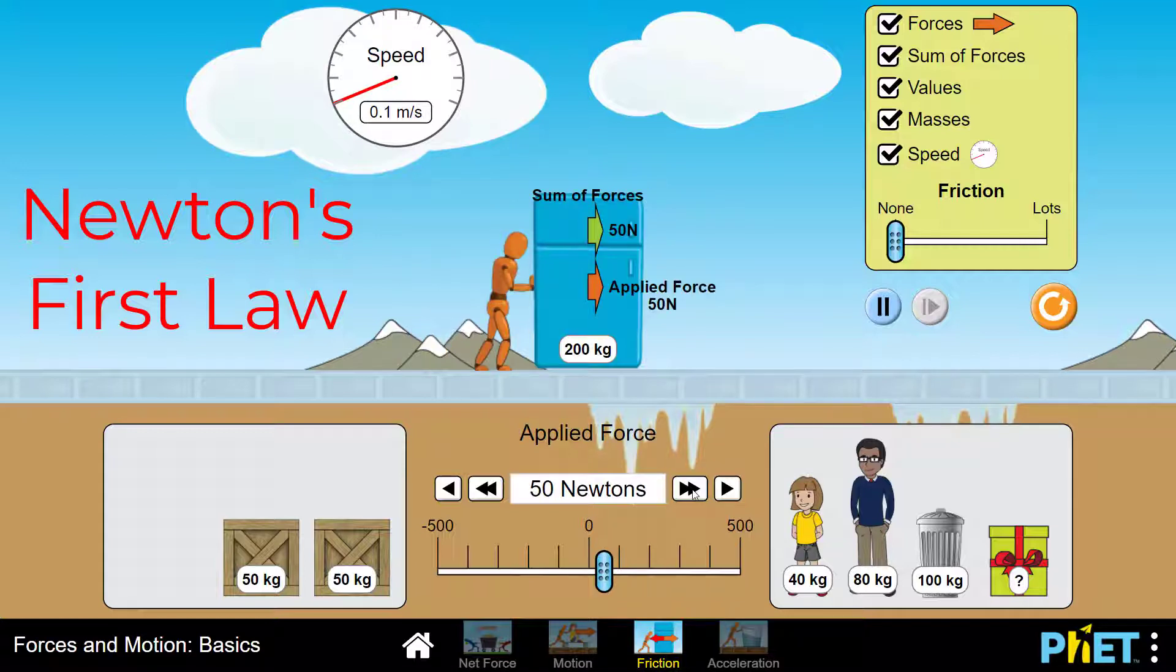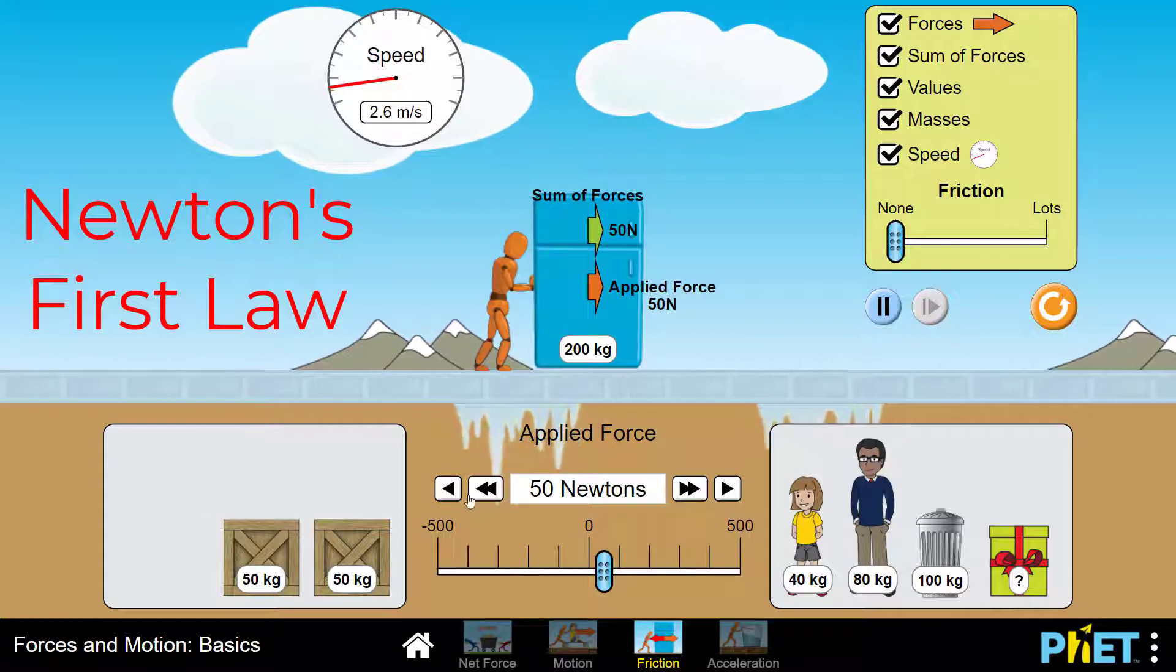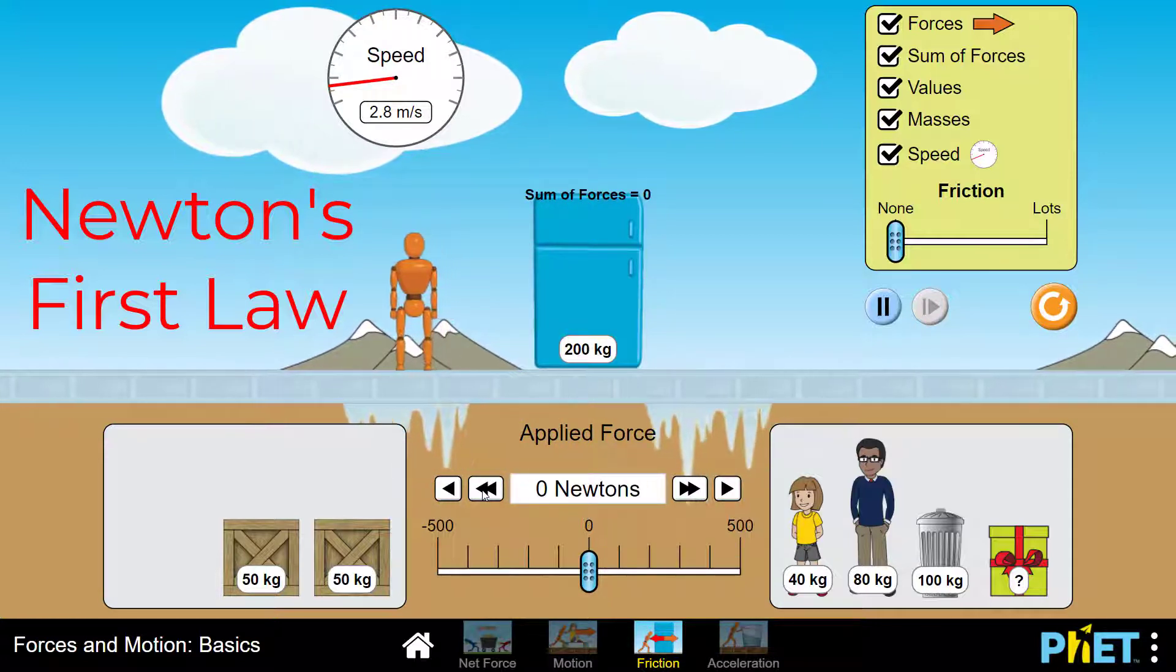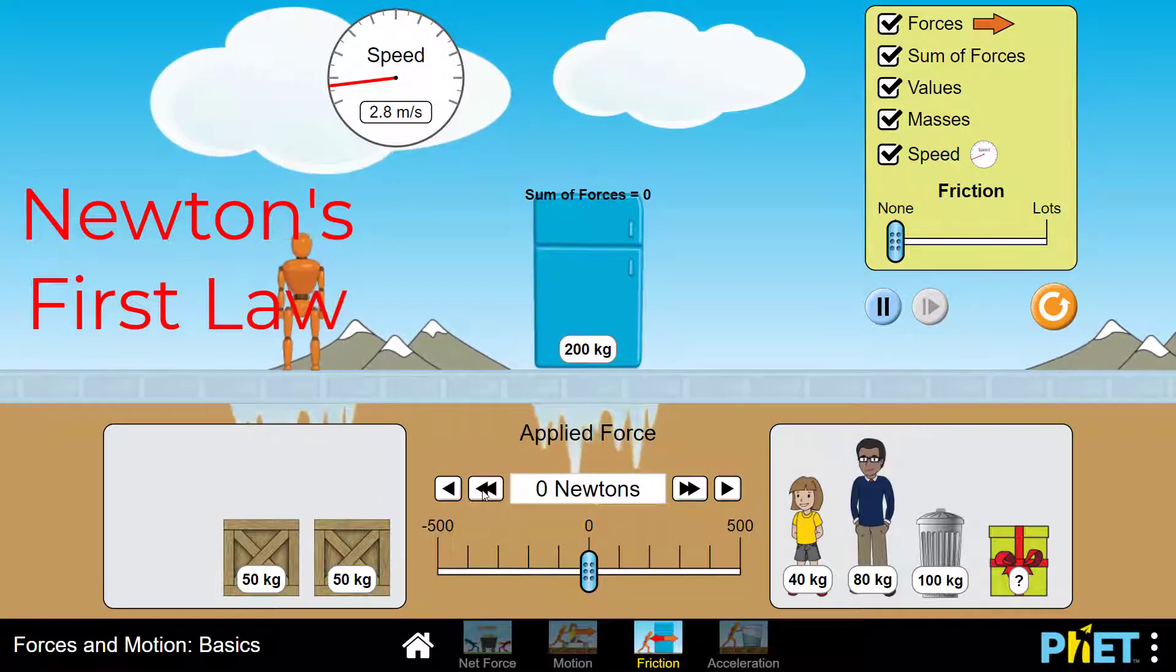I'm starting over and again applying a 50-Newton force to the refrigerator. The acceleration created by this force changes the refrigerator's speed. Now watch what happens if I remove this force. The acceleration disappears, but the refrigerator is still moving. Notice, though, that it's moving at a constant speed.